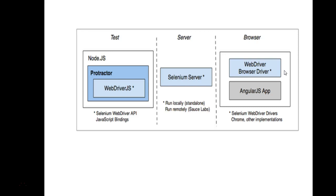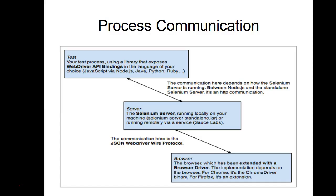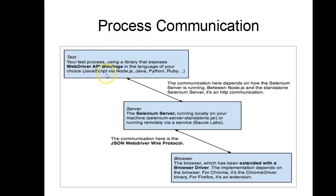Now let's see how exactly process communication happens between these three layers. In the previous slide we discussed the three-layer architecture; now we'll see how communication happens between the test layer, the server layer, and the browser layer. In the test layer, your test process uses a library that exposes WebDriver API bindings — in JavaScript via Node.js, or Java, or Python.